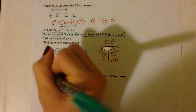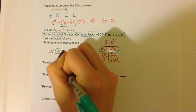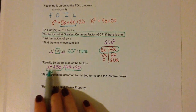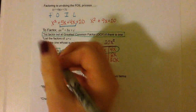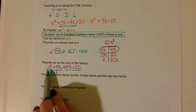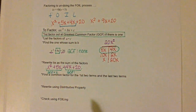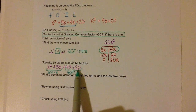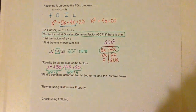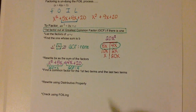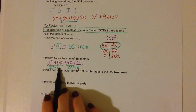Now, looking at these two, we are going to group them. If we group x squared and 5x, what is the GCF? Well, the GCF would just be x — you can take an x out of both of those. Then looking at the next set, what would the GCF be for 4x and 20? Well, 20 doesn't have an x, so we can't take out an x, but we can take out a 4.